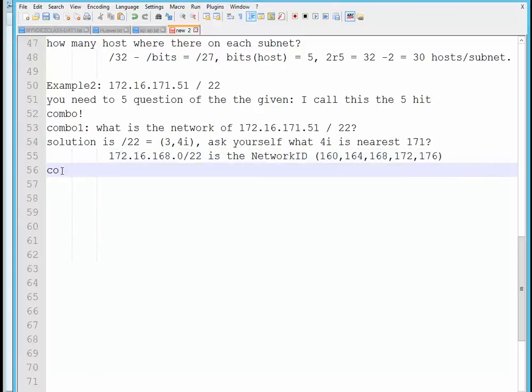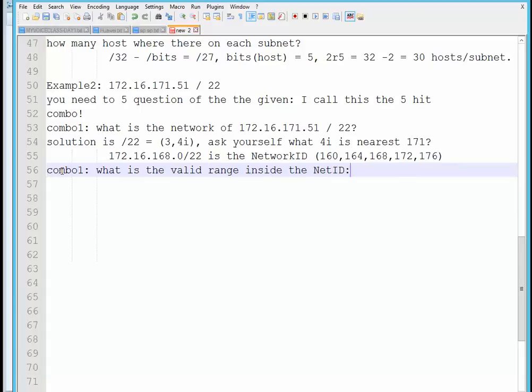Now the second combo, combo question number two is, what is the valid range inside the net ID? Well, the solution is just get the next subnet, subtract two, but we add one to the subnet.